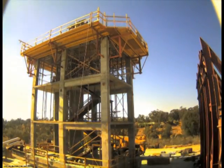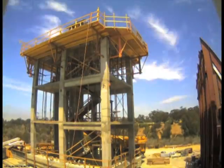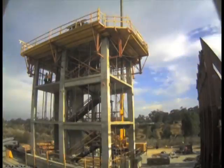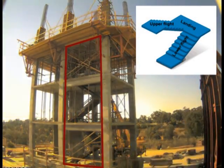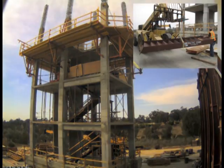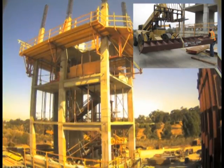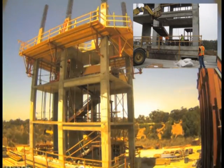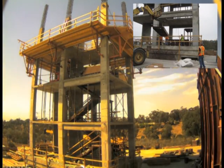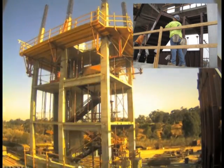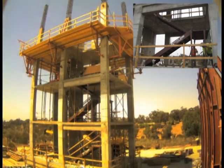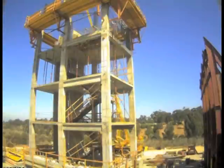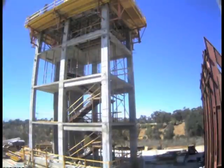Once the second floor was completed, the system formwork was raised for construction of the third floor where the columns and shear walls were installed. This process was repeated for each subsequent floor. In addition to structural formwork, prefabricated metal stairs were installed at each level to provide access to the upper levels. The stairs are built off-site and then moved to the site for installation. Stair installation occurs in two phases: during the first phase, the stairs connect only the first three lower floors; after completion of the building skeleton, the second phase connects the upper two floors.